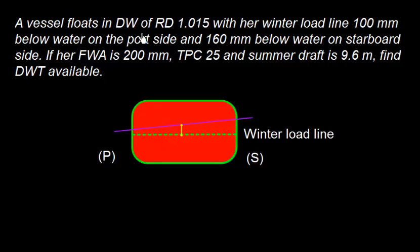A vessel floats in dock water of RD 1.015 with her winter load line 100 mm below water on the port side and 160 mm below water on starboard side. If her freshwater allowance is 200 mm, TPC 25 and summer draft is 9.6 meters, find the dead weight available.